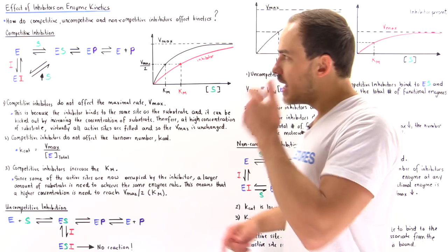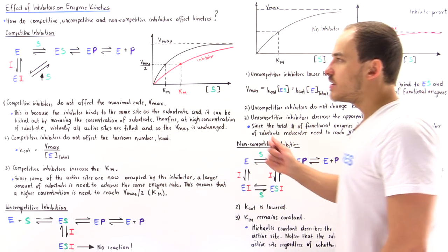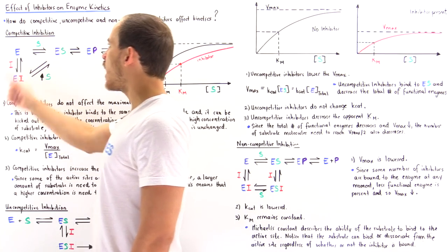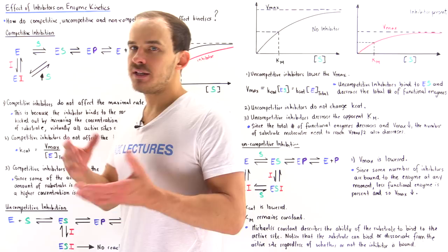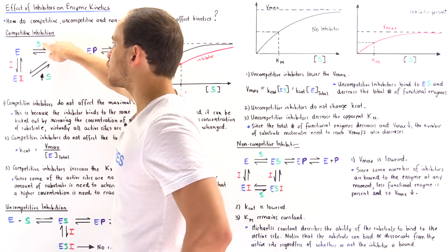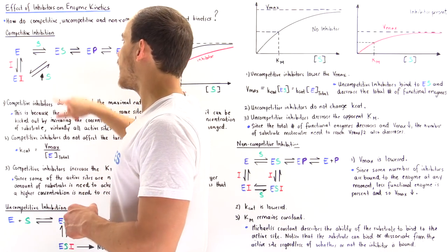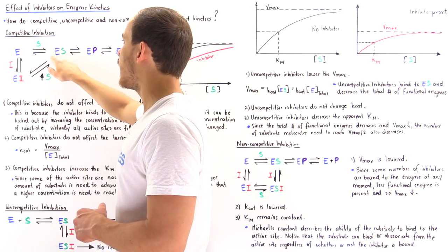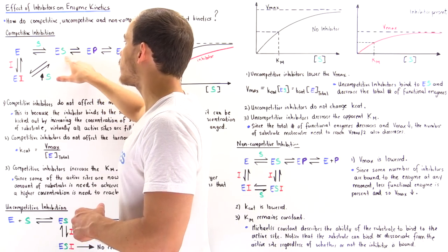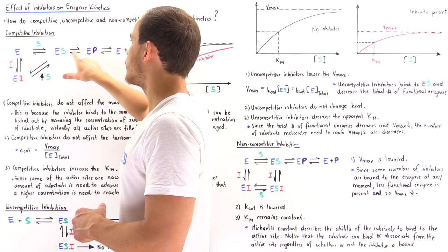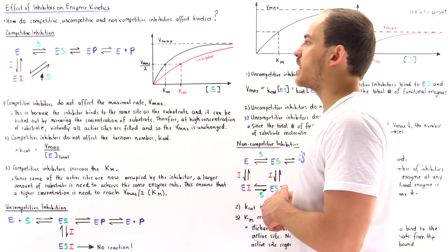So let's begin by focusing on competitive inhibition. This is the equation that describes competitive inhibition. In the absence of an inhibitor, that substrate is going to collide into and bind to the active site of the enzyme, forming the functional enzyme-substrate complex. That complex will then catalyze and transform the substrate into the product, which will then dissociate and be released from the active site.